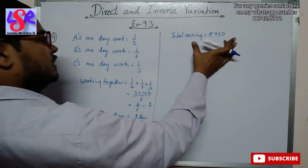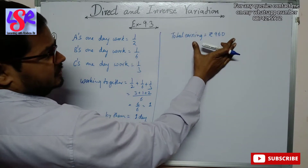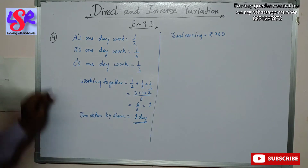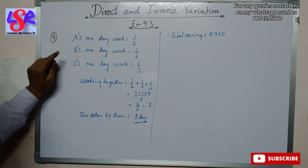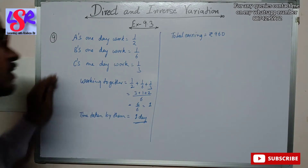Now the total earning is rupees 960 and this is going to be divided among A, B and C as per their work.